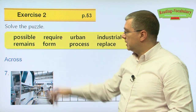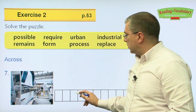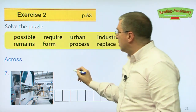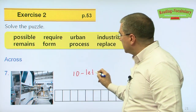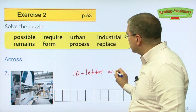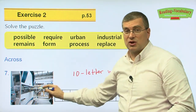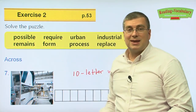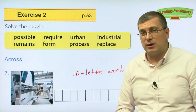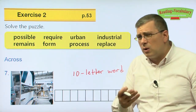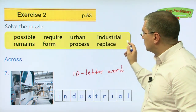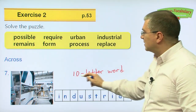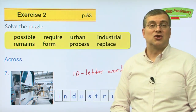Number seven across — ten letters. We're looking for a ten-letter word that goes with this picture. In this picture we can see the inside of a factory, so this is having to do with factories. Remember the word? That was 'industrial' — I-N-D-U-S-T-R-I-A-L, ten letters. That's our ten-letter word that matches the picture.